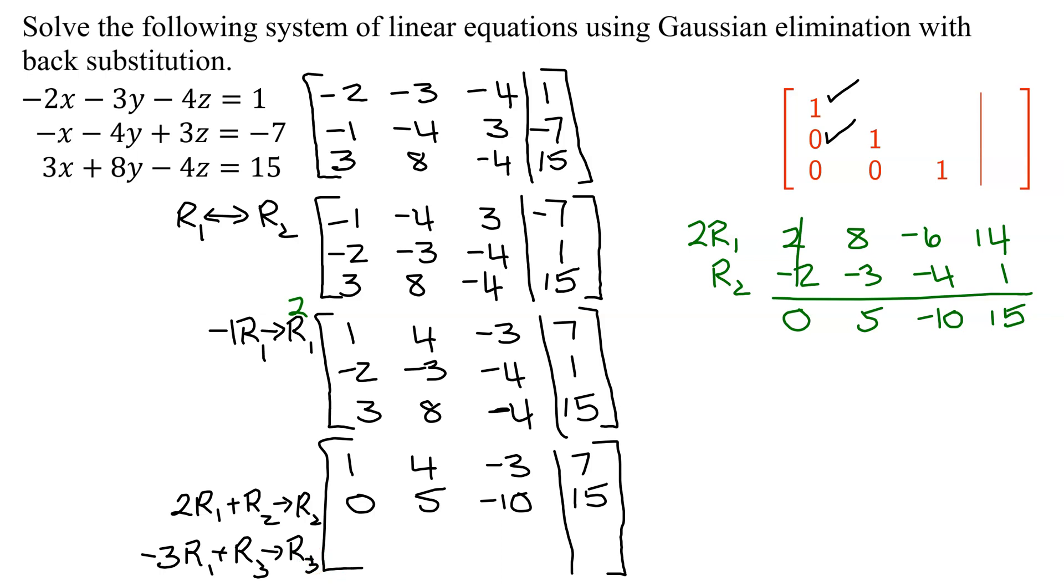So now I'm going to do some scratch work again. Now I'm multiplying by negative 3. I have negative 3 times row 1, and I'm going to add it to row 3. Negative 3 times 1, negative 3. Negative 3 times 4, negative 12. Negative 3 times negative 3, positive 9. Negative 3 times 7 is negative 21.